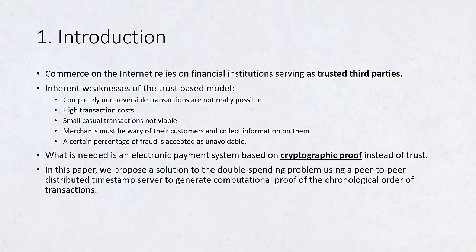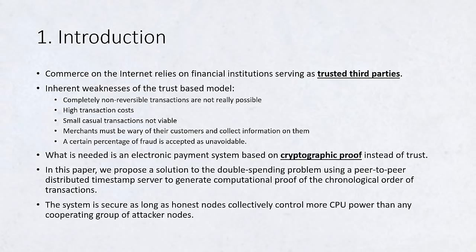In this paper we propose a solution to the double spending problem using a peer-to-peer distributed timestamp server to generate computational proof of the chronological order of transactions. The system is secure as long as honest nodes collectively control more CPU power than any cooperating group of attacker nodes.